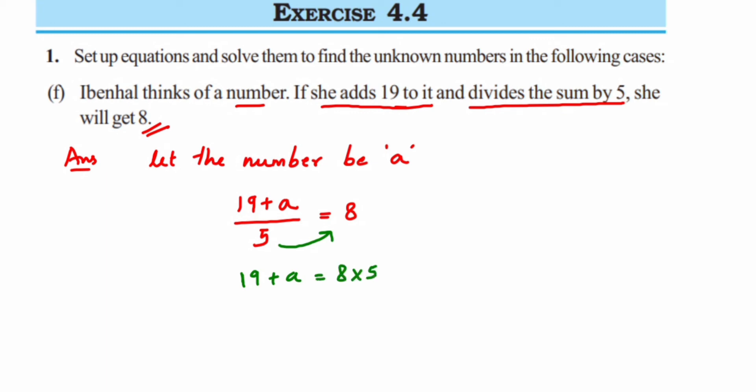Now we want all the numbers on one side, right? So we're going to take 19 to the other side. It becomes subtraction because 19 is an addition here. So from here we'll get a equals 40 minus 19. Just simply subtract; you will get the answer as 21. So the number she thinks of is 21.